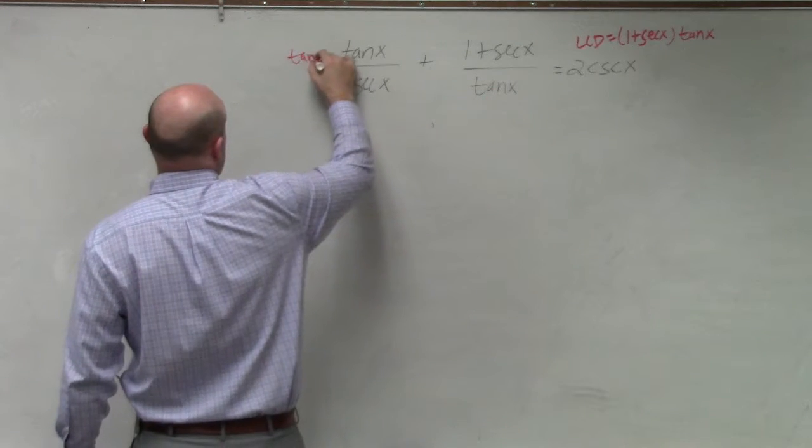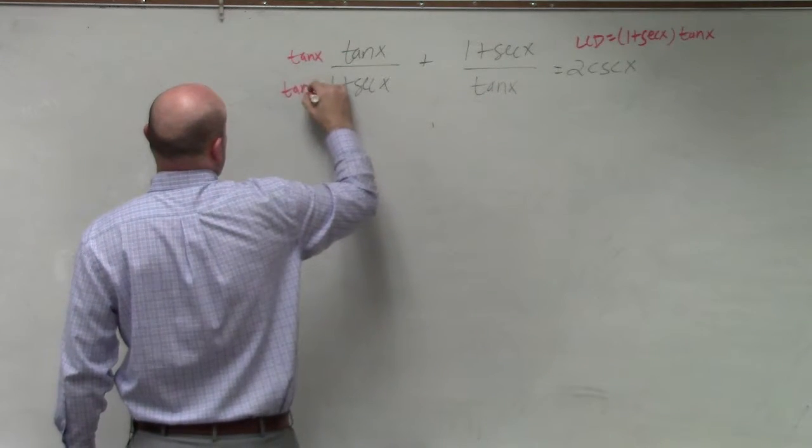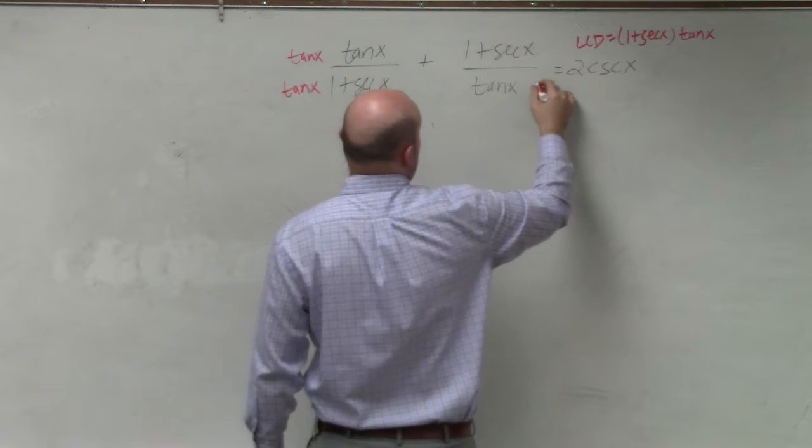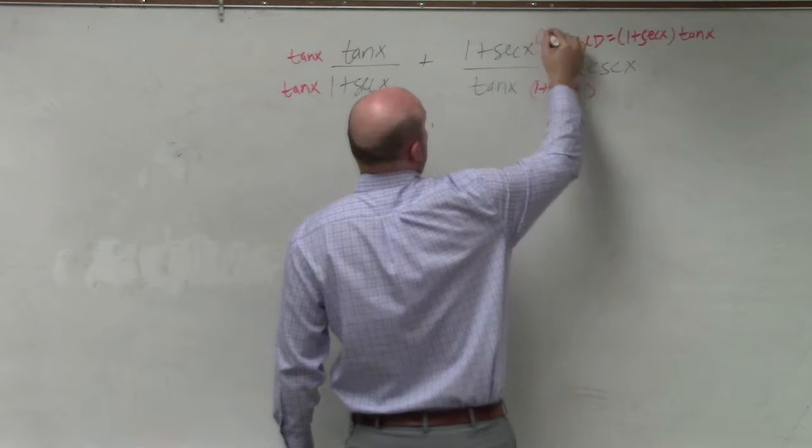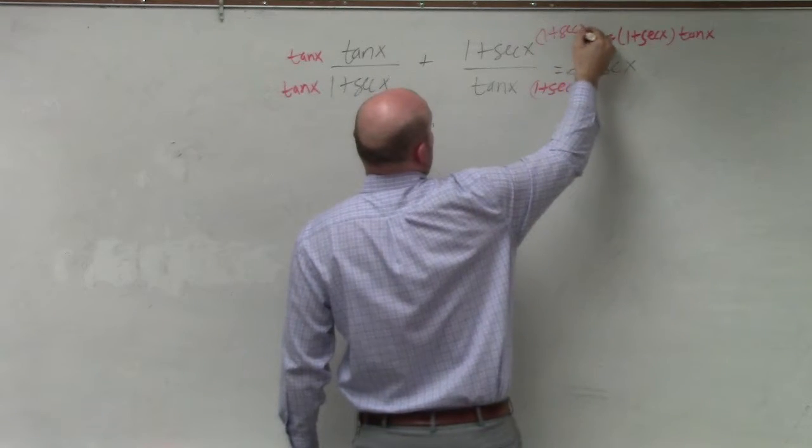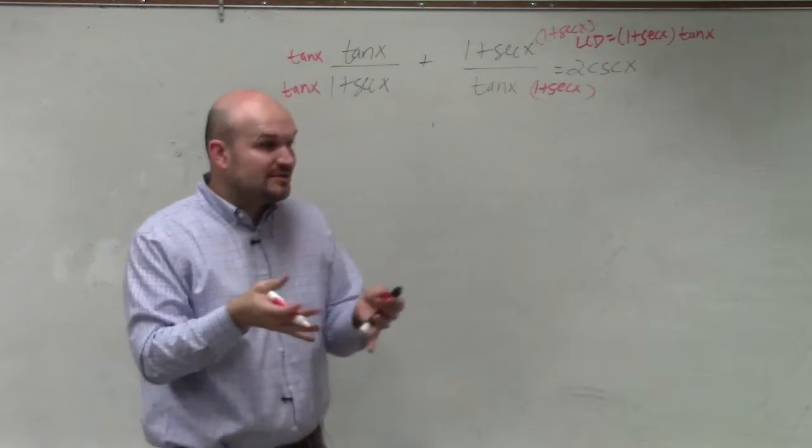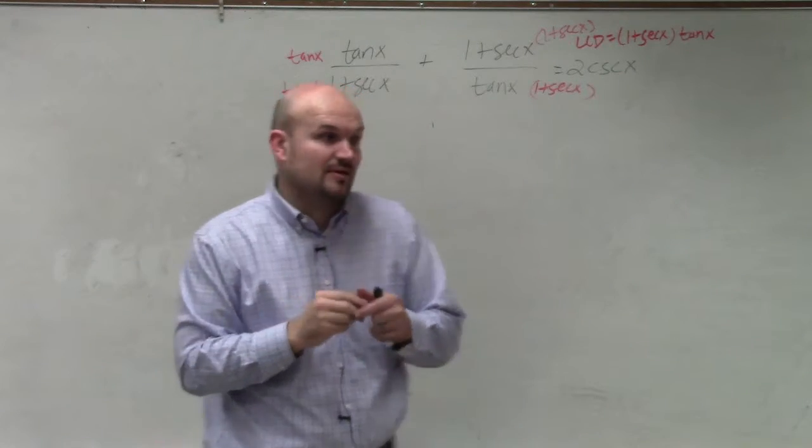So to get common denominators, I need to multiply this by tan x over tan x, and then here, (1+sec x) over (1+sec x). Now when I do that, I can put them under the same denominator, which is common, which is now tan x times (1+sec x).